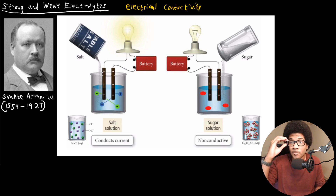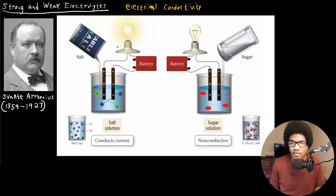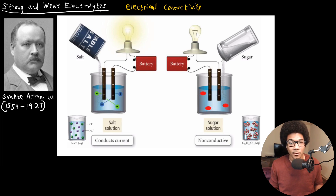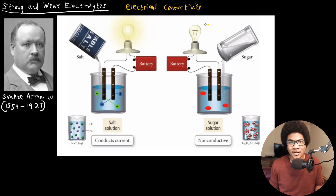We have an example here of two different solutions hooked up to a battery connected to a lamp. In the first example, we have a salt solution — salt dissolved in water. The battery is hooked up through the solution and the light bulb is shining, meaning the salt solution conducts electricity. In the second graphic, we have a sucrose (sugar) solution, and with the same battery setup, the light simply does not turn on.